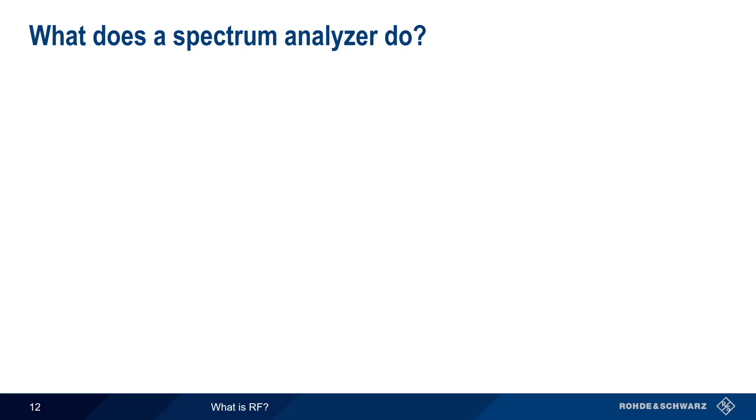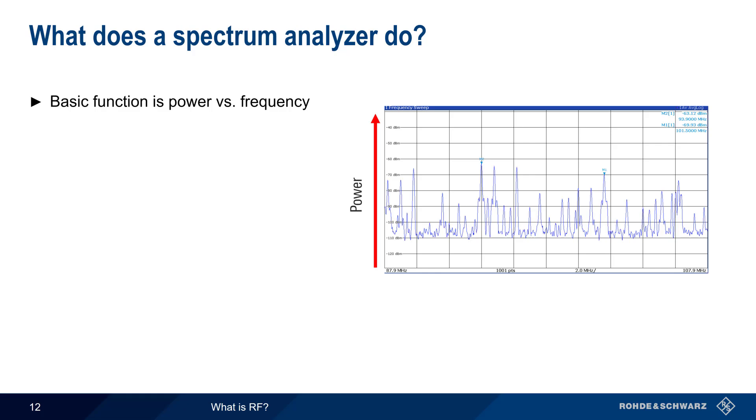The most basic function of a spectrum analyzer is displaying power versus frequency. This is a fancy way of saying that we want to know where RF is present and how much RF is present. In many cases, power is measured relative to other powers and is therefore expressed in dB or decibels.